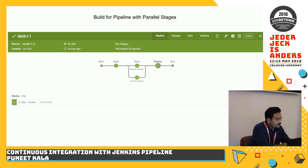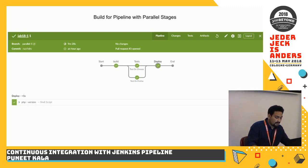This is how a parallel pipeline would look: you have a build stage, and once the build stage is done, there are two stages in parallel — test on Chrome and test on Firefox. Once those pass, you go to the deploy stage and that's the end of your pipeline.